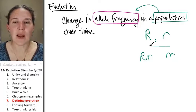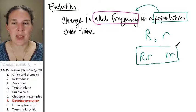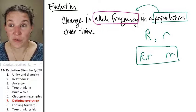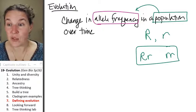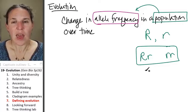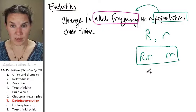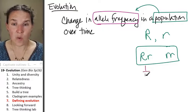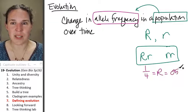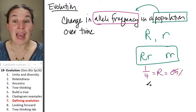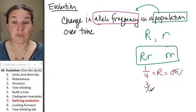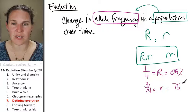Now, if he and I were a population, we could calculate our allele frequency. So what we have to do is say, hey, we have four total alleles. One out of four are big R, which is what, 25%? And three out of four are little r, which is 75%.